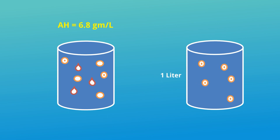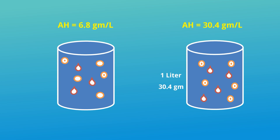Now we take one more container of the same volume — 1 liter. Here the moisture particles are added and the moisture content is 30.4 grams. So in this container, 30.4 grams of moisture content or water vapor is present in 1 liter, meaning the absolute humidity is 30.4 grams per liter.